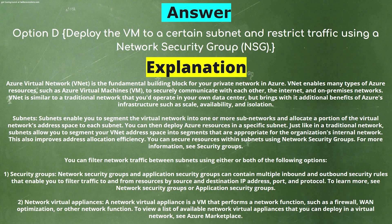You can secure resources within subnets using Network Security Groups. You can filter network traffic between subnets using the following options: number one, Network Security Groups and Application Security Groups can contain multiple inbound and outbound security rules that enable you to filter traffic to and from resources by source and destination IP address, port, and protocol. Number two, Network Virtual Appliances — a VM that performs a network function such as a firewall or WAN optimization.